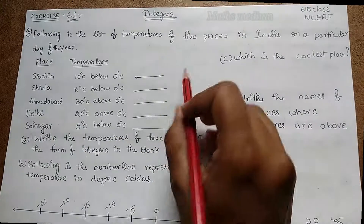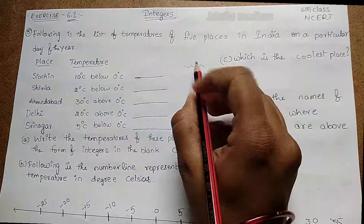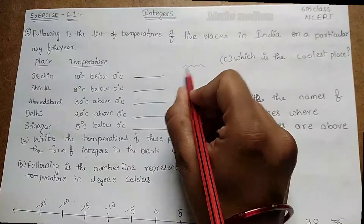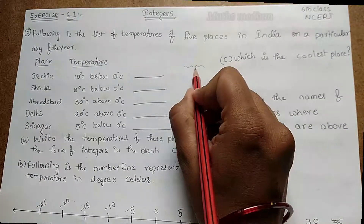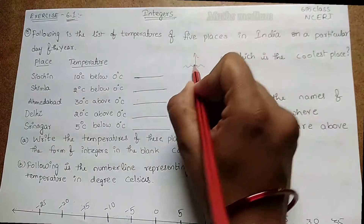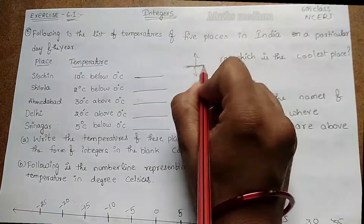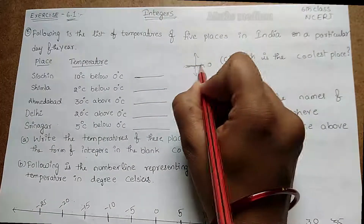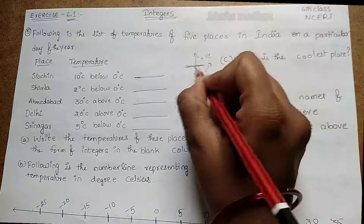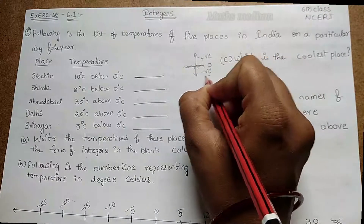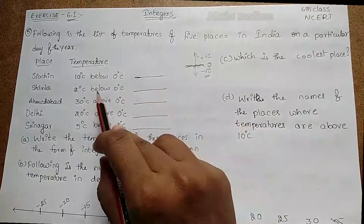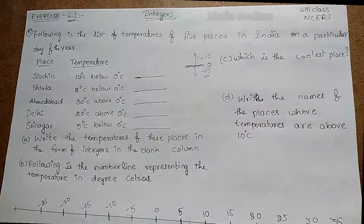For example, if you take sea level — this is below sea level and this is above sea level. Let sea level be 0. Above sea level is positive and below sea level we denote as negative. Similarly, we apply this same concept here.